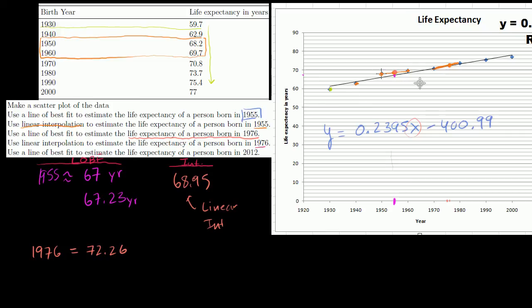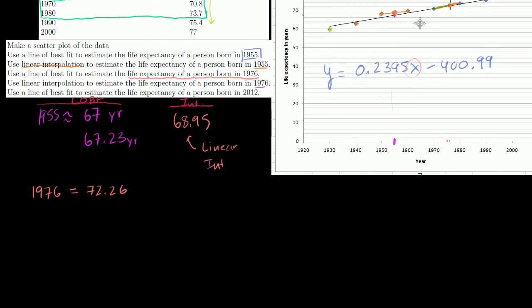Before, 1955 was right in between those two values. 1976 is not right in between those values. So let's actually figure out the equation of this line using the points, using these two points. Using the points 1970 comma 70.8 and 1980 comma 73.7. Let's figure out the slope of that line. So the slope is the change in y over change in x.